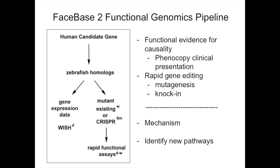In the zebrafish system, we can identify homologs for human genes and very quickly gain gene expression data, much of which is already deposited on ZFIN. Even if it's not, we can do whole-embryo in situ hybridization in a matter of days. Functionally, we can generate CRISPR mutants in months — not only for the genes in question but also for genes in the same pathway. We can also draw on the wealth of existing zebrafish mutants from mutagenesis and retroviral insertional projects.